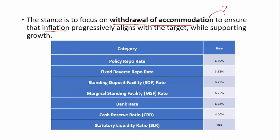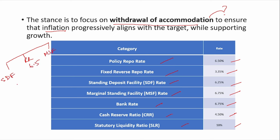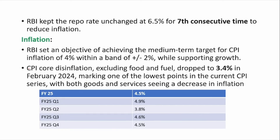Currently, the various policy rates are: Repo rate 6.5%, Fixed Reverse Repo rate 3.35%, SDF 6.25%, MSF 6.75%, Bank Rate 6.75%, CRR 4.5%, and SLR 18%. SDF and MSF rates are always linked to the repo rate — SDF is always minus 0.25% and MSF is always 0.25% more than the repo rate. RBI has kept the repo rate unchanged at 6.5% for the 7th consecutive time to reduce inflation.